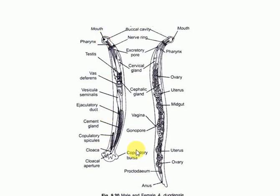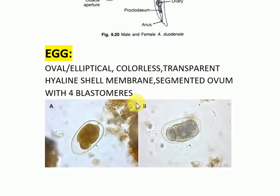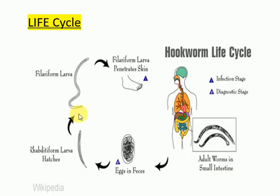Now let us see the egg. The egg is oval or elliptical, colorless, transparent, with a hyaline shell membrane and a segmented ovum with four blastomeres. You can see now the life cycle — you can explain it through this image.